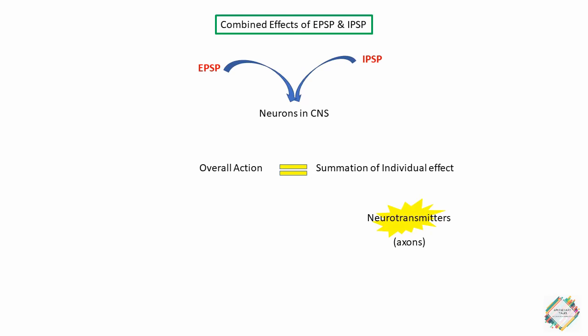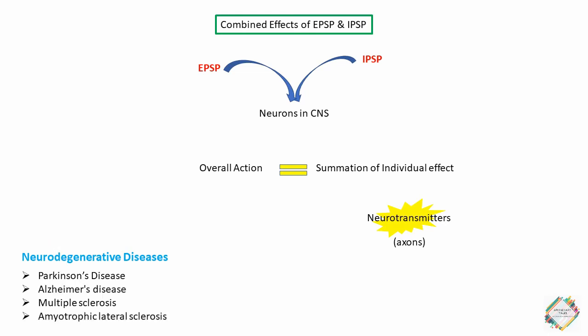Neurodegenerative diseases such as Parkinson's disease, Alzheimer's disease, multiple sclerosis, and amyotrophic lateral sclerosis are devastating illnesses characterized by the progressive loss of selected neurons in discrete brain areas, resulting in characteristic disorders of movement, cognition, or both. In our coming videos we'll be talking about the different treatment strategies used in these neurodegenerative diseases.